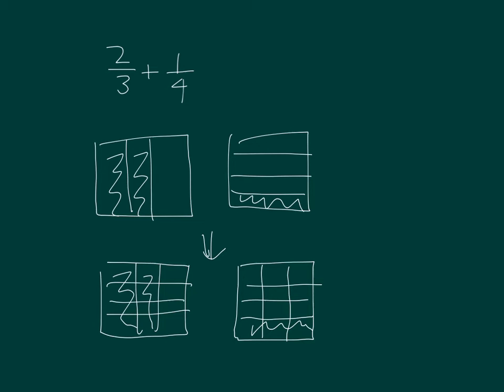And eight twelfths and three twelfths equals eleven twelfths. What I had was two thirds multiplied by four, multiplied by four to get eight twelfths, and one fourth times three times three equaling three twelfths.